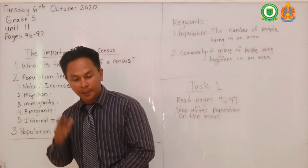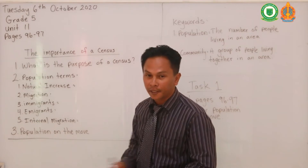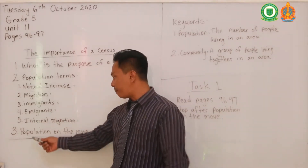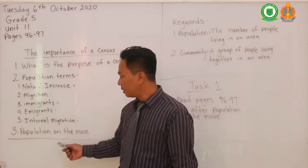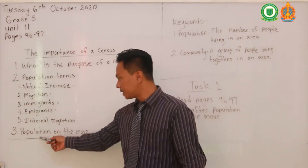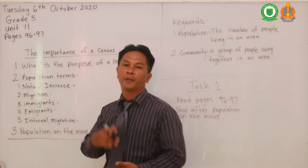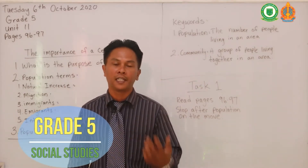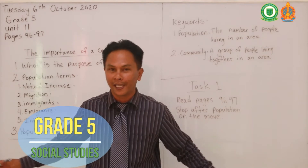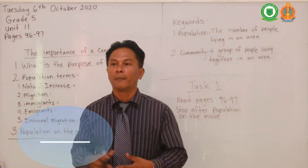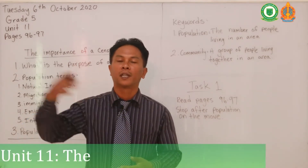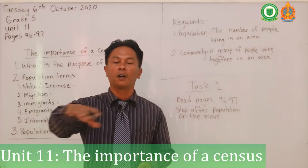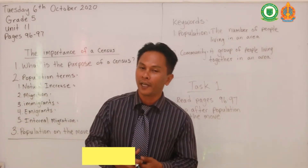These are a few population terms included in the census. Moving along to number three — population on the move. This section talks about how populations move, say from town to town or city to city. Looking at the wider world, we're talking about how people move from one country to another, especially across large bodies of ocean.